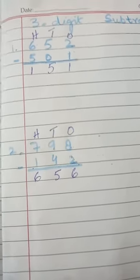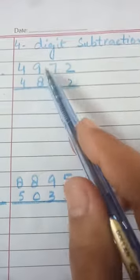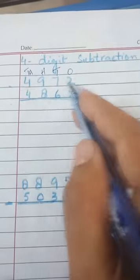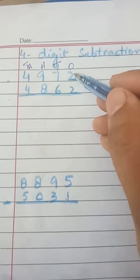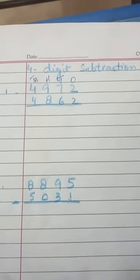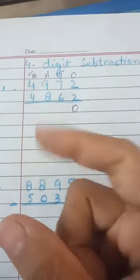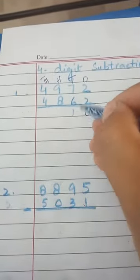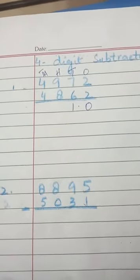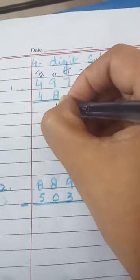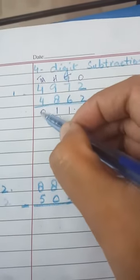Now, 4-digit subtraction: 4972 minus 4862. First, give them names: ones, tens, hundreds, and thousands, because we have 4 digits. Starting from ones: 2 minus 2 is 0. Tens: 7 minus 6 — count after 6 up to 7, that's 1. Hundreds: 9 minus 8 — count from 8 up to 9, that's 1 finger, so 1 is the answer. Thousands: 4 minus 4 is 0. So the answer is 0110.